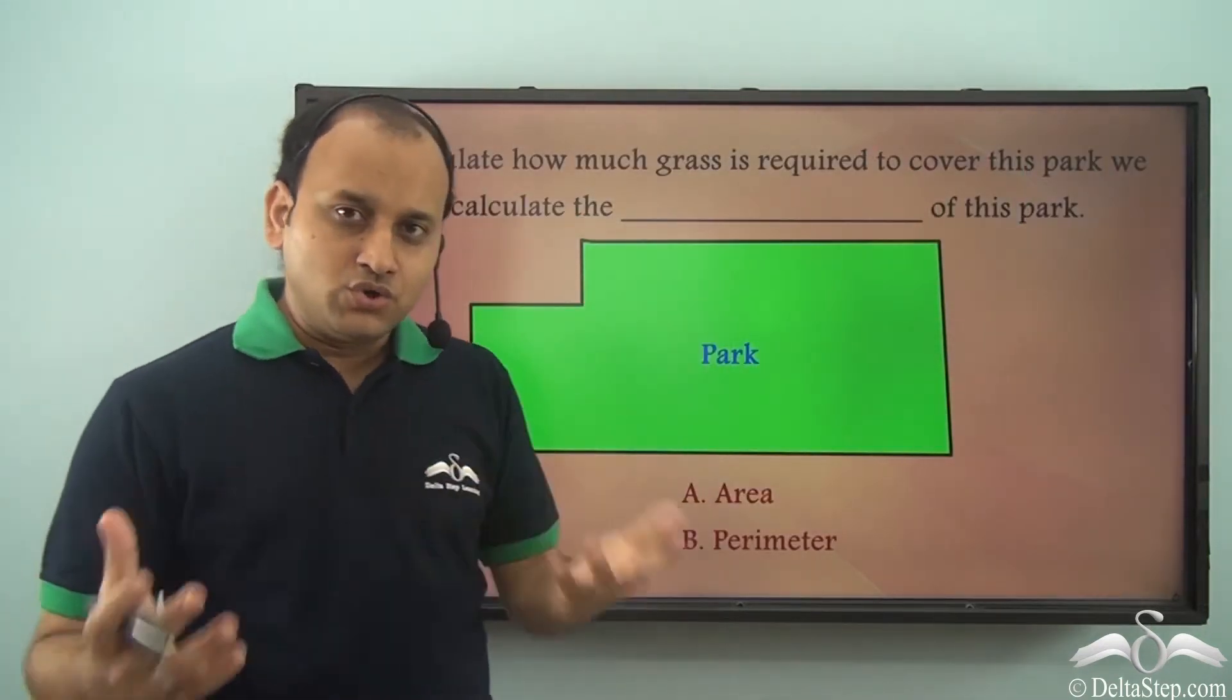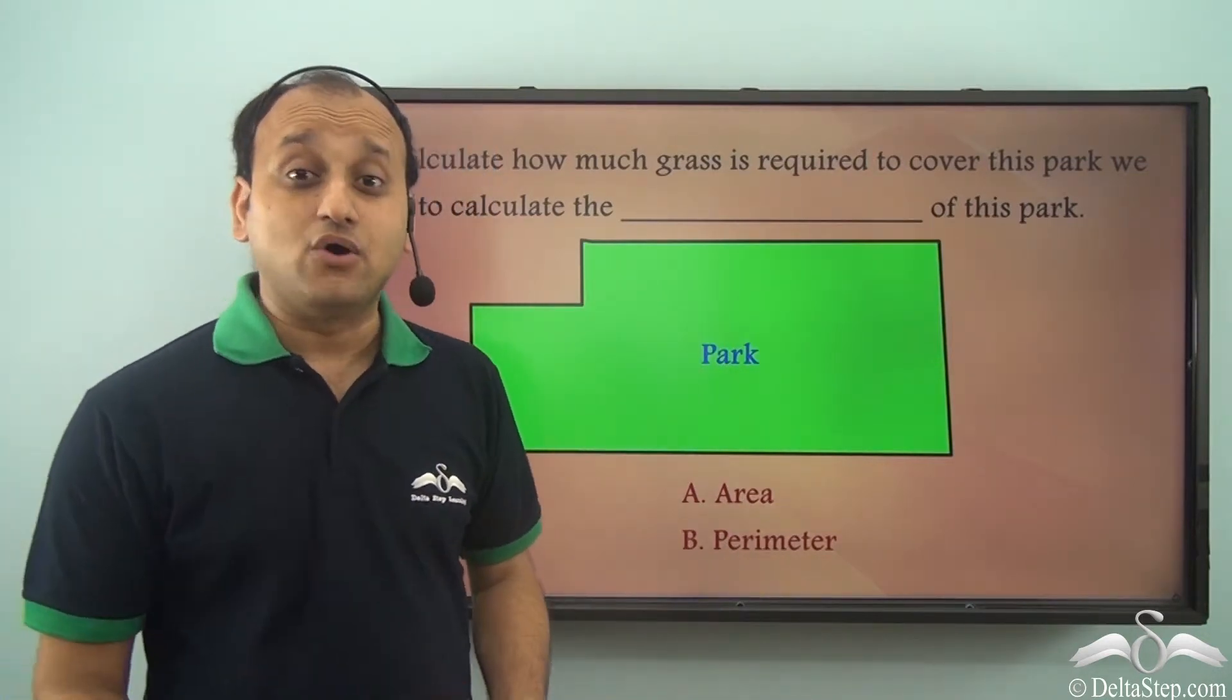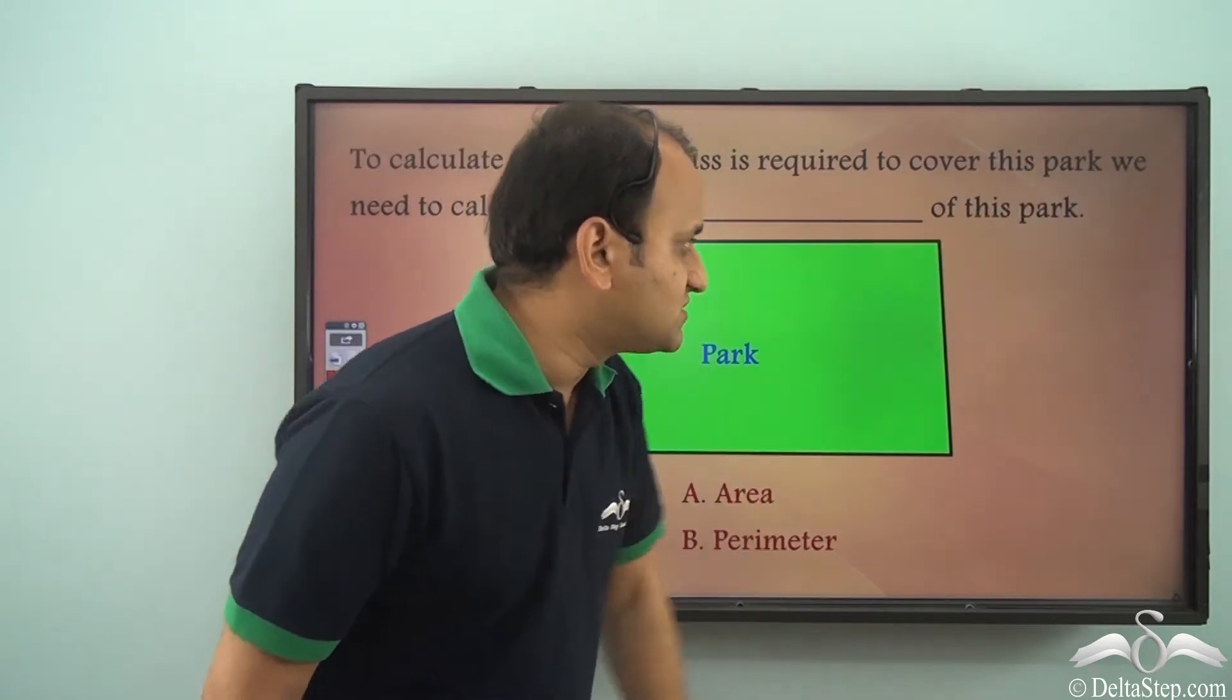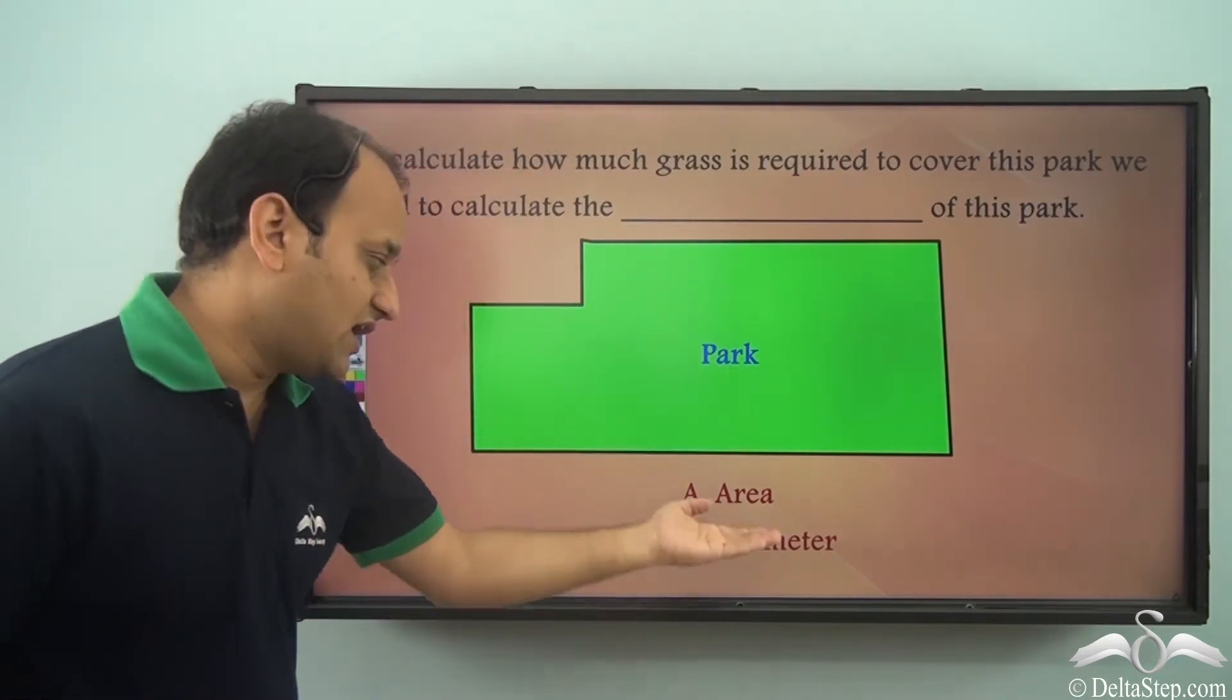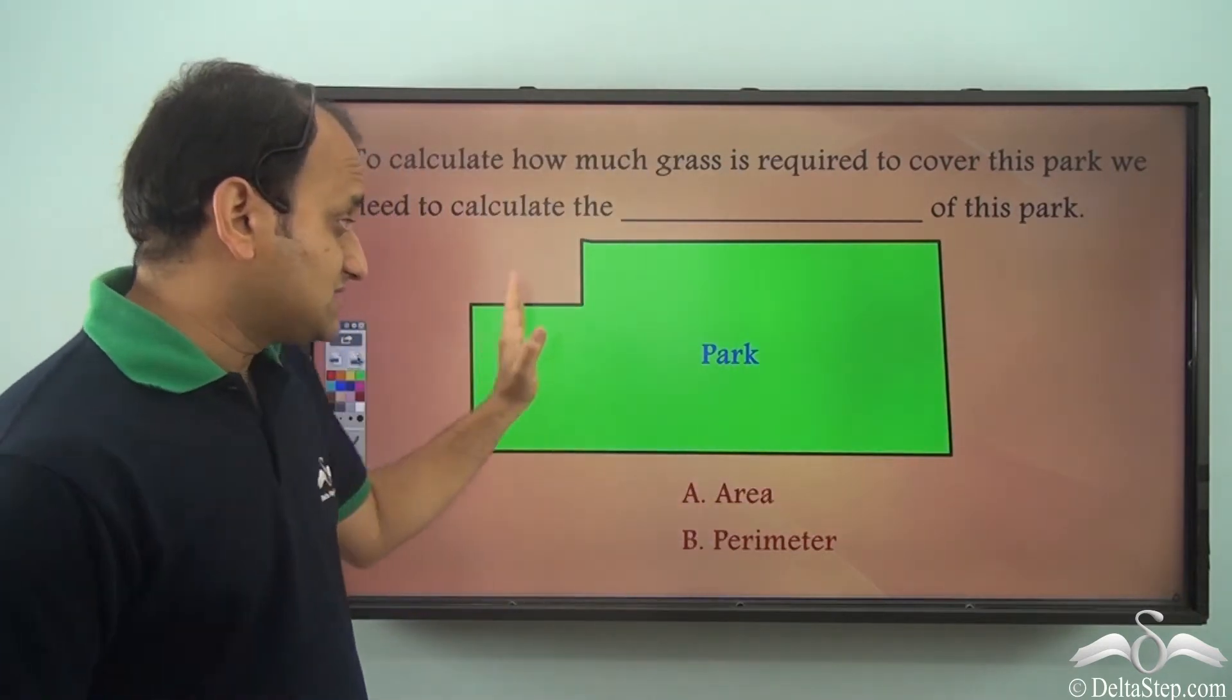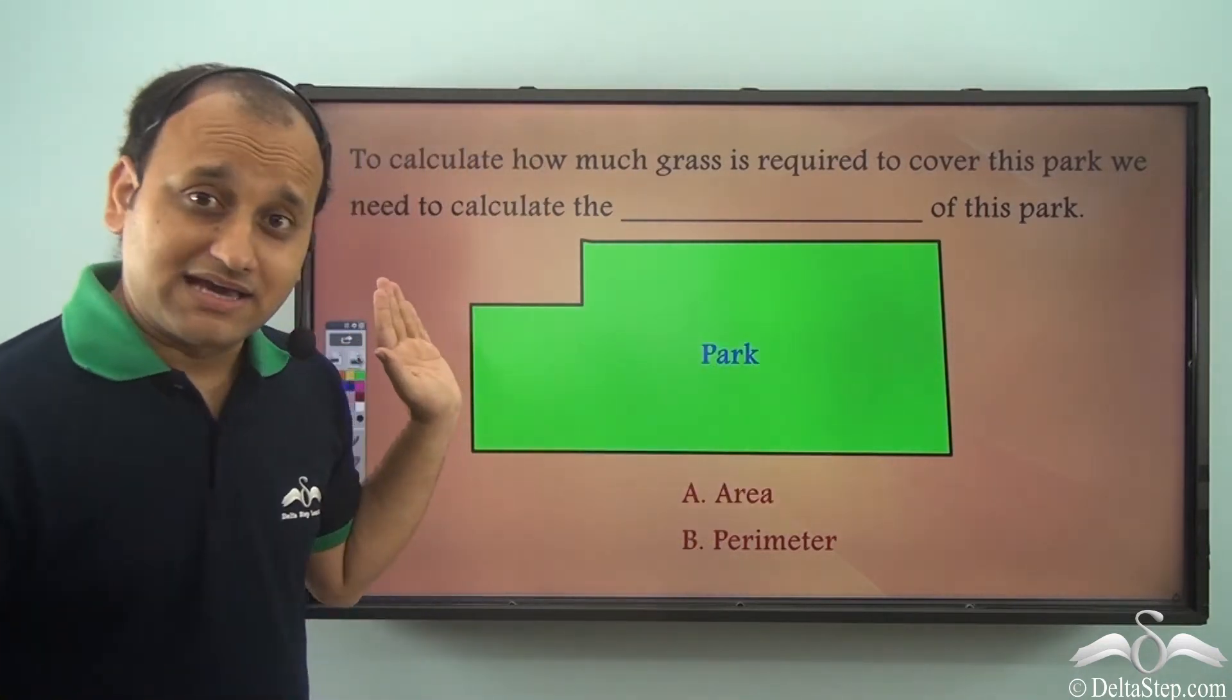Now that you know what exactly is area and you have already learned in previous lectures about perimeter, can you answer this question? To calculate how much grass is required to cover this park, we need to calculate the dash of this park. Is it area or is it perimeter? If you need to cover this park with grass, then what exactly do you need to calculate? The space of this park, isn't it?